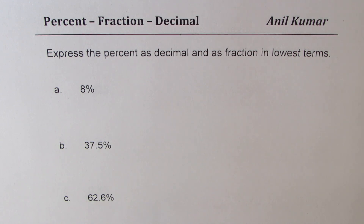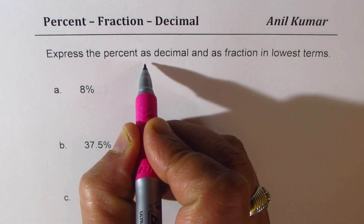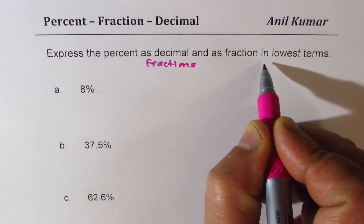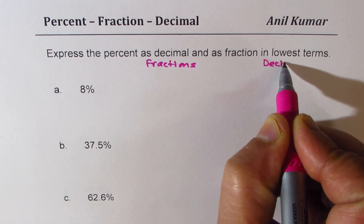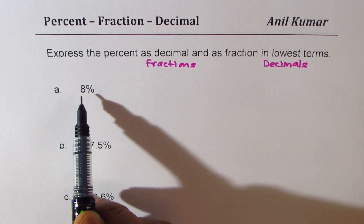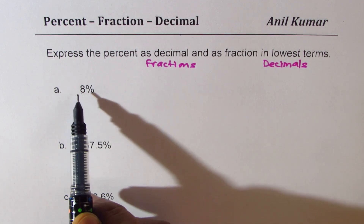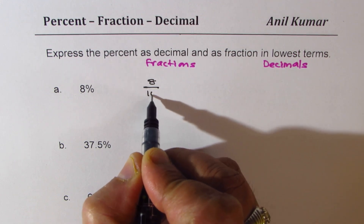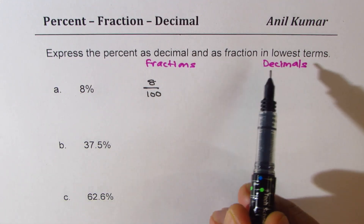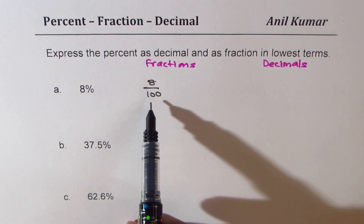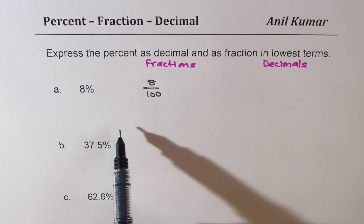Let us write down first the fractions and then decimals. To write fractions from percent, we have to write out of 100. 8% means 8 out of 100. Here you will see we need to write fractions in lowest terms, so we'll simplify it later.